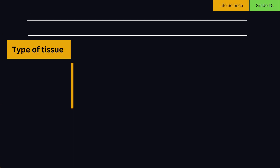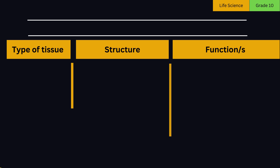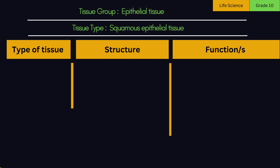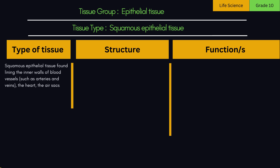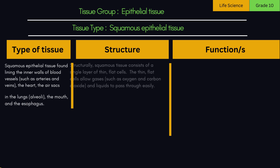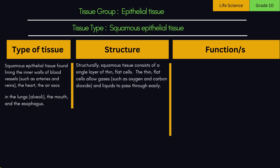Let's first look at the different types of epithelial tissues, their structure, and their functions. A. Squamous epithelial tissue. We have squamous epithelial tissue, found lining the inner walls of blood vessels, such as arteries and veins, the heart, the air sacs in the lungs, alveoli, the mouth, and the esophagus. Structurally, squamous tissue consists of a single layer of thin, flat cells.